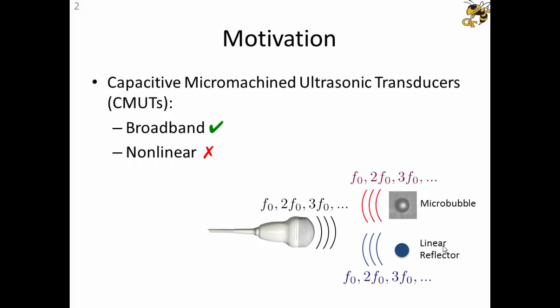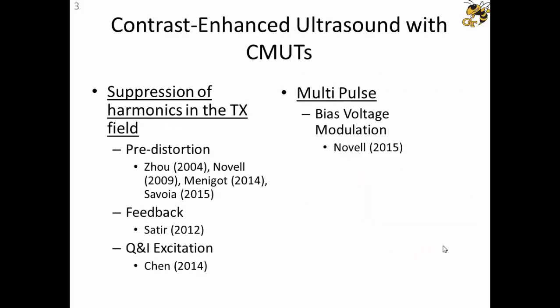The harmonic distortion leads to complications like extracting the microbubble information, distinguishing the linear reflectors and microbubbles using conventional techniques like pulse inversion and amplitude modulation. So to use these transducers effectively for contrast microbubble imaging, we have to deal with nonlinearity. This problem has been studied extensively in the CMUT community for quite some time now, and numerous approaches have been proposed. These methods can be divided into two main camps.